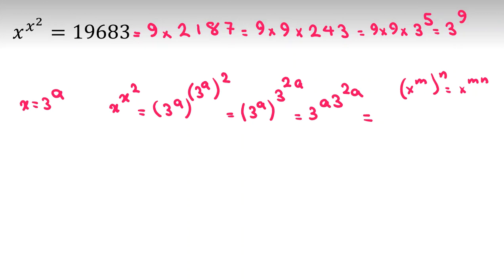Since this equals 3 to the 9th, and the bases are equal, the exponents must be equal. So a times 3 to the 2a equals 9.